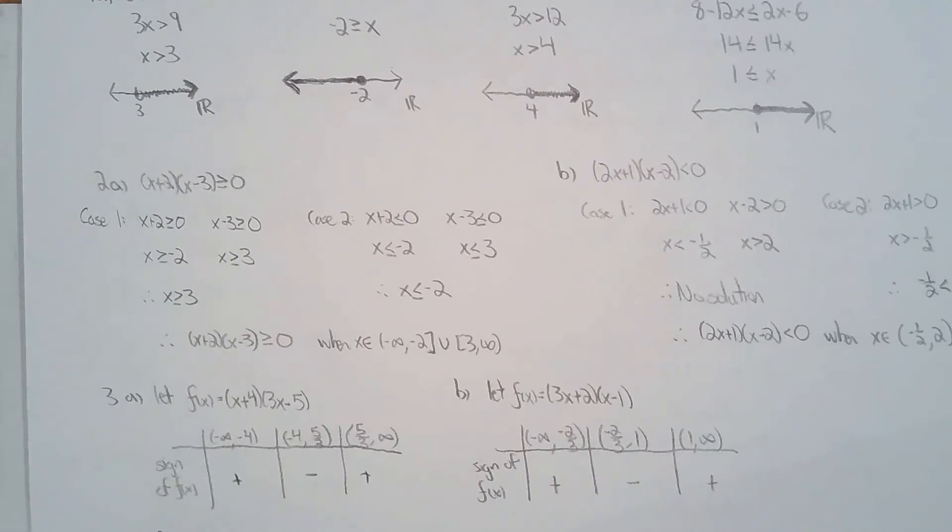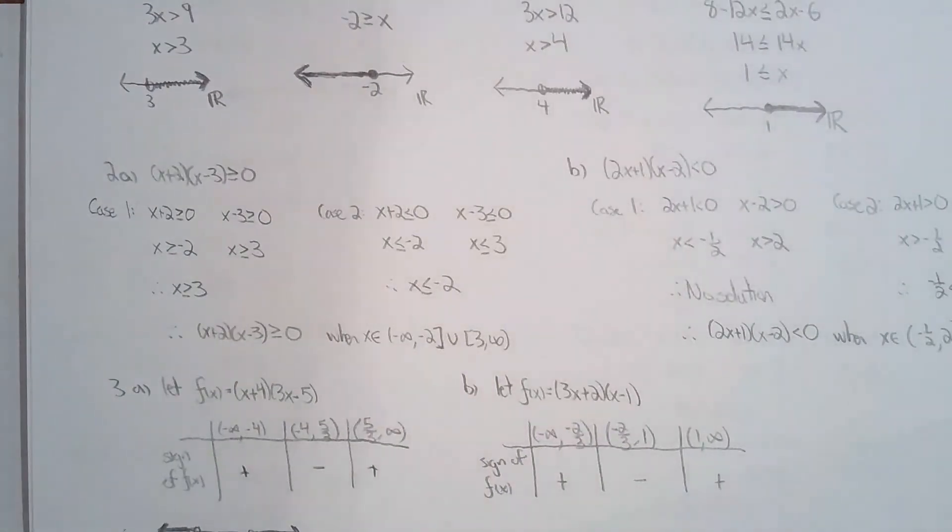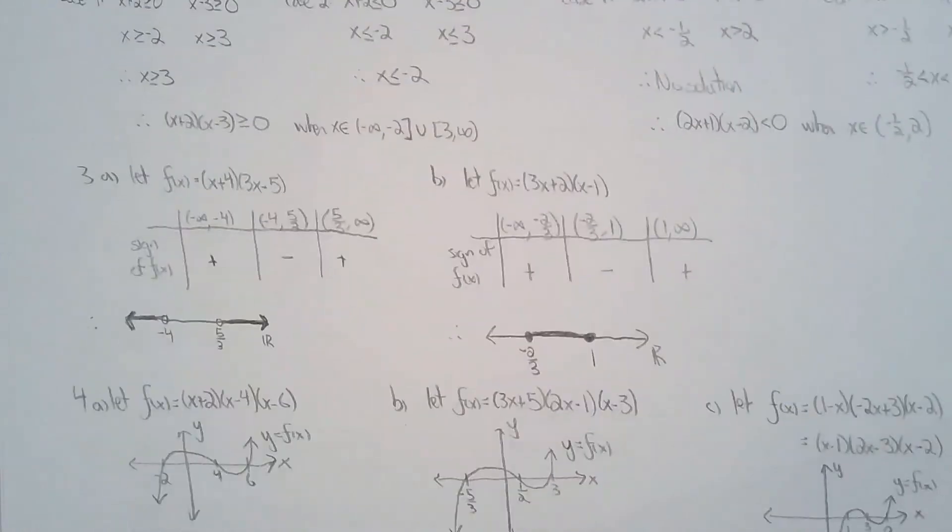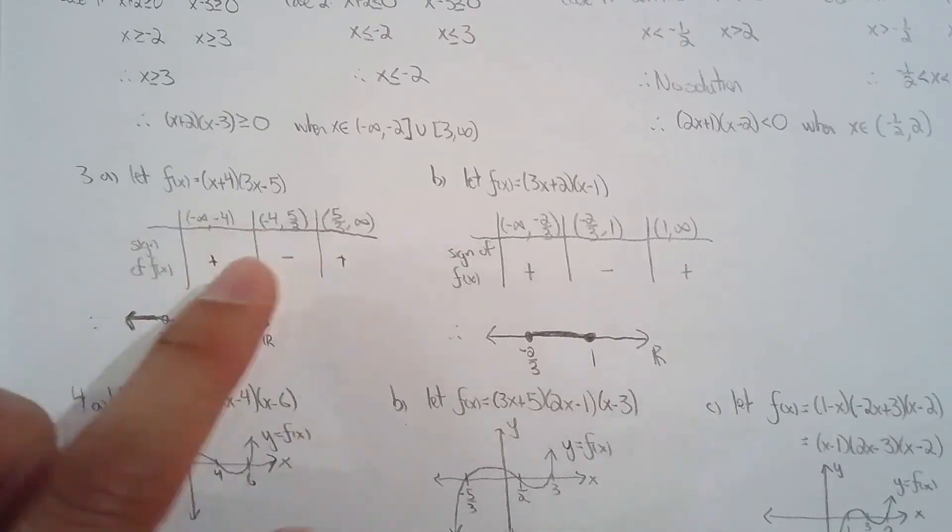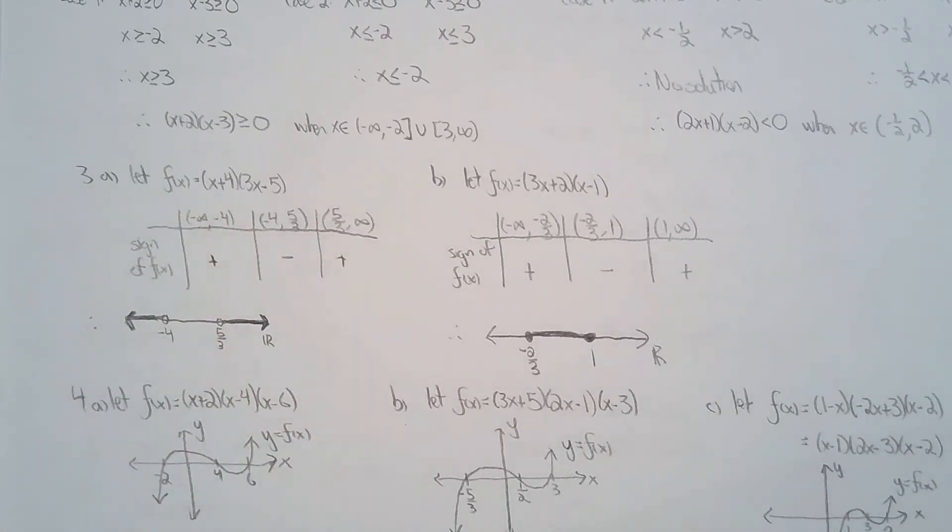For question 3, they ask us to solve using an interval table and show the solution on a number line. So I solved it using an interval table and I showed them my solution. The good news about number 3 and number 2, it's already factored for us, so we didn't have to do the factoring. We can create the intervals very quickly because it was factored for us.